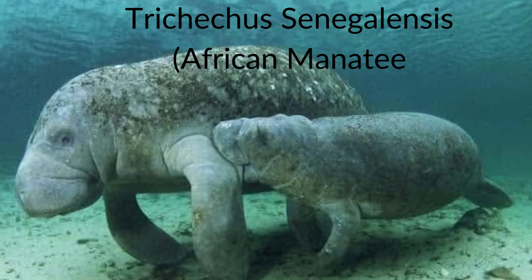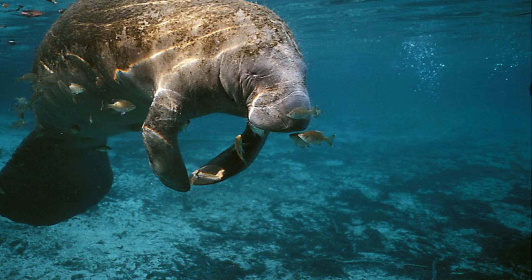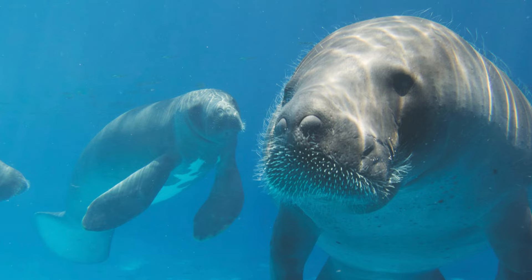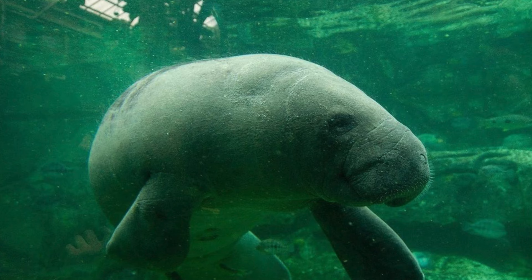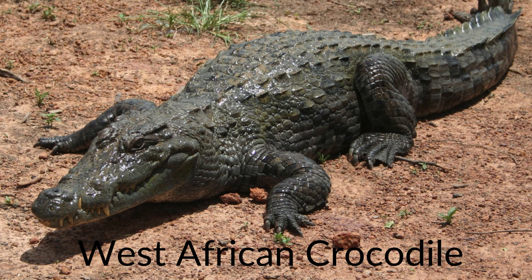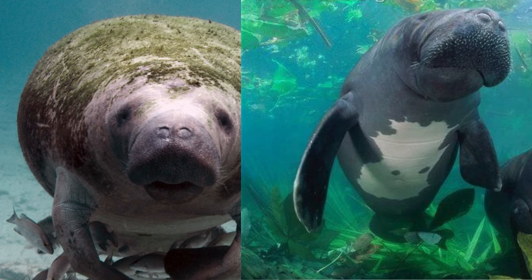The African manatee, Trichechus senegalensis, is by far the most basal living species in the genus Trichechus. It can be found all across the west coast of Africa, throughout various marshland systems and other freshwater environments. This species is also omnivorous, with more coastal populations feeding on more than 50% non-plant material, including mollusks and fish, while more inland populations are primarily herbivorous. This species is also the smallest living Sirenian recognised, with a maximum weight of about 360 kilograms and a maximum length of about 4.5 metres or 15 feet long. The only predators of the African manatee are humans and the relatively small crocodilian, the West African crocodile.